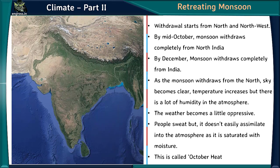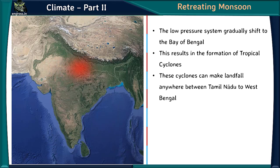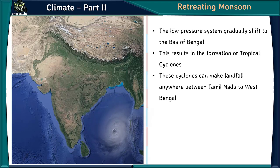The last season is the retreating monsoon. Withdrawal starts from north and northwest; by mid-October it withdraws from north India, and by December from the entire mainland. As monsoon withdraws from the north, the sky becomes clear and temperature increases, but high humidity makes the weather oppressive — people sweat without relief as the atmosphere is saturated with moisture. This is called 'October heat.' As the sun moves south towards the Tropic of Capricorn, the low-pressure system shifts to the Bay of Bengal, causing tropical cyclones that can make landfall anywhere from Tamil Nadu to West Bengal.